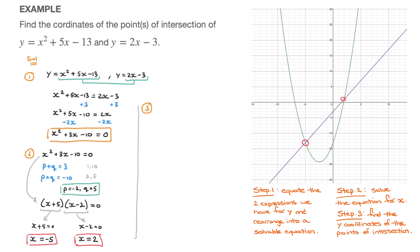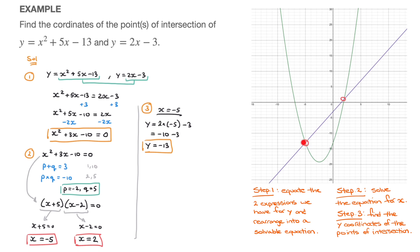We do this twice, once for each x-coordinate. Starting with x equals negative 5: using the line equation, y equals 2 times negative 5 minus 3, which equals negative 10 minus 3, which equals negative 13. So when x equals negative 5, y equals negative 13. That point of intersection has coordinates negative 5, negative 13.